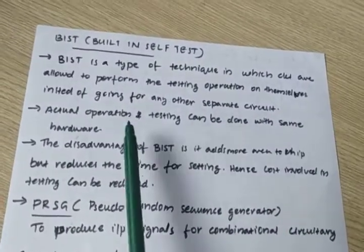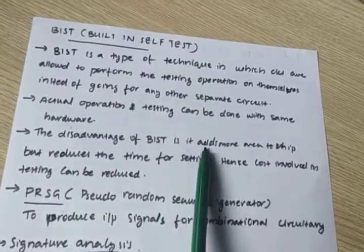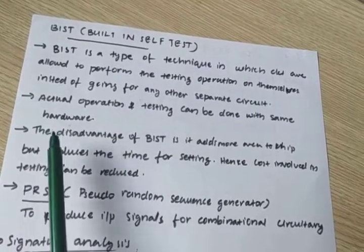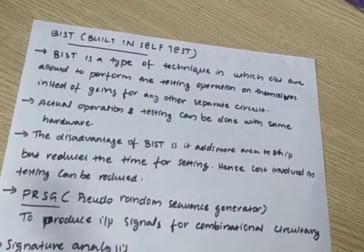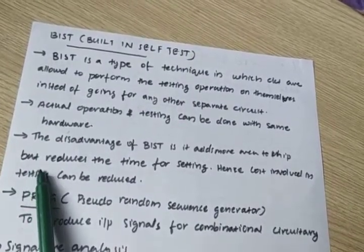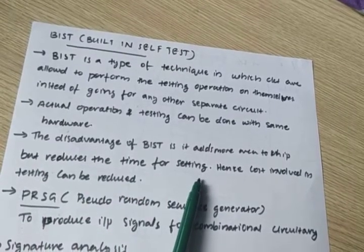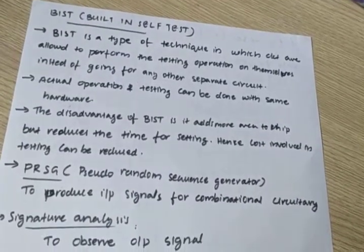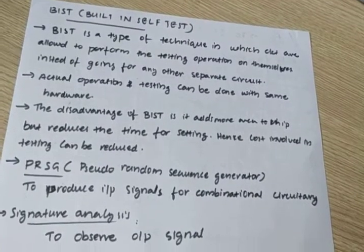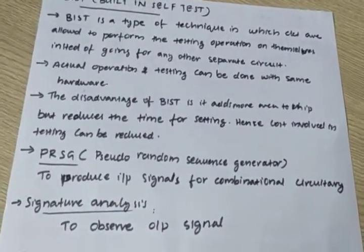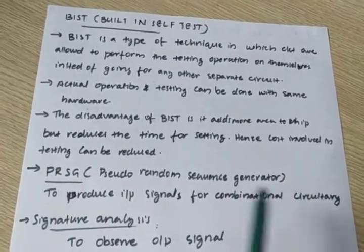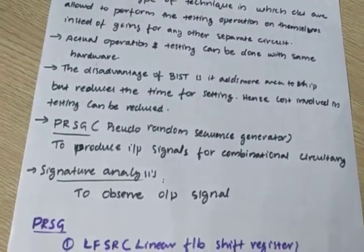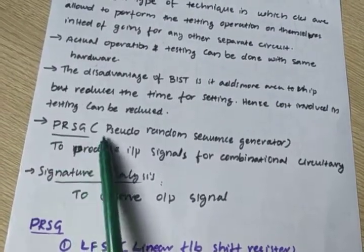The actual operation and testing can be done with the same hardware — that's the advantage. The disadvantage of BIST is that it adds more area to the chip, because we are adding some additional circuitry to the system. However, the advantage is that it reduces the time for testing, meaning the cost involved in testing can be reduced. Chip area increases but external hardware circuitry can be eliminated, so cost is reduced.